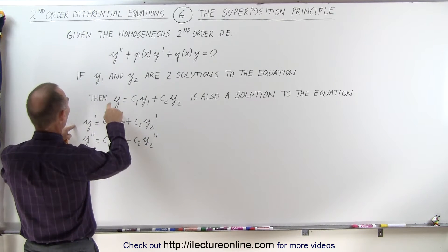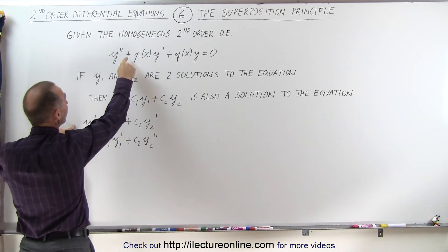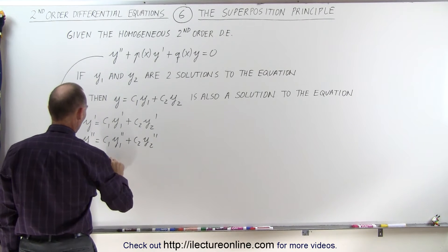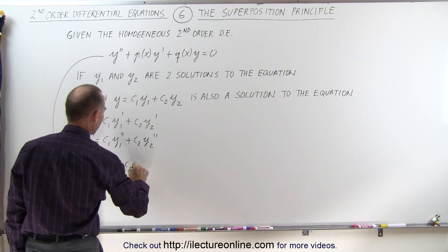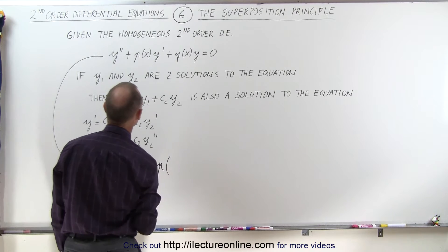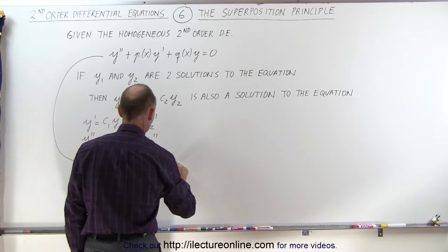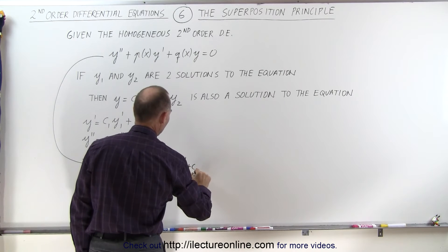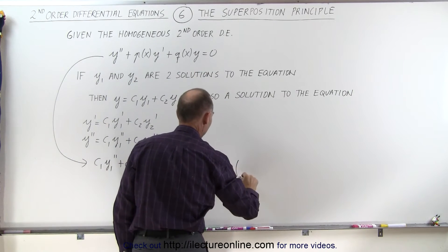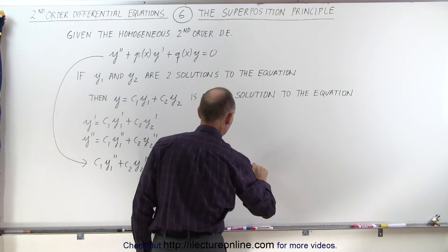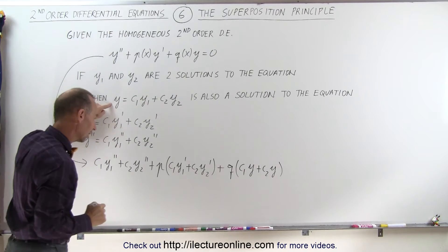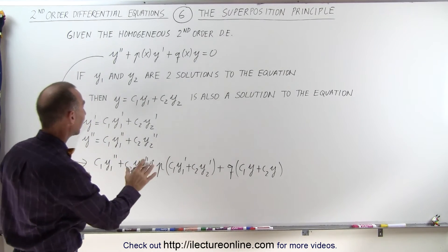And then if we plug y, y prime, and y double prime back in the original equation, let's see what we get. We get c1 y1 double prime plus c2 y2 double prime plus p times y prime, which is equal to this. That would be c1 y1 prime plus c2 y2 prime plus q times y, which is equal to this, c1 y plus c2 y. I guess I was looking at this here. And that is equal then to zero.